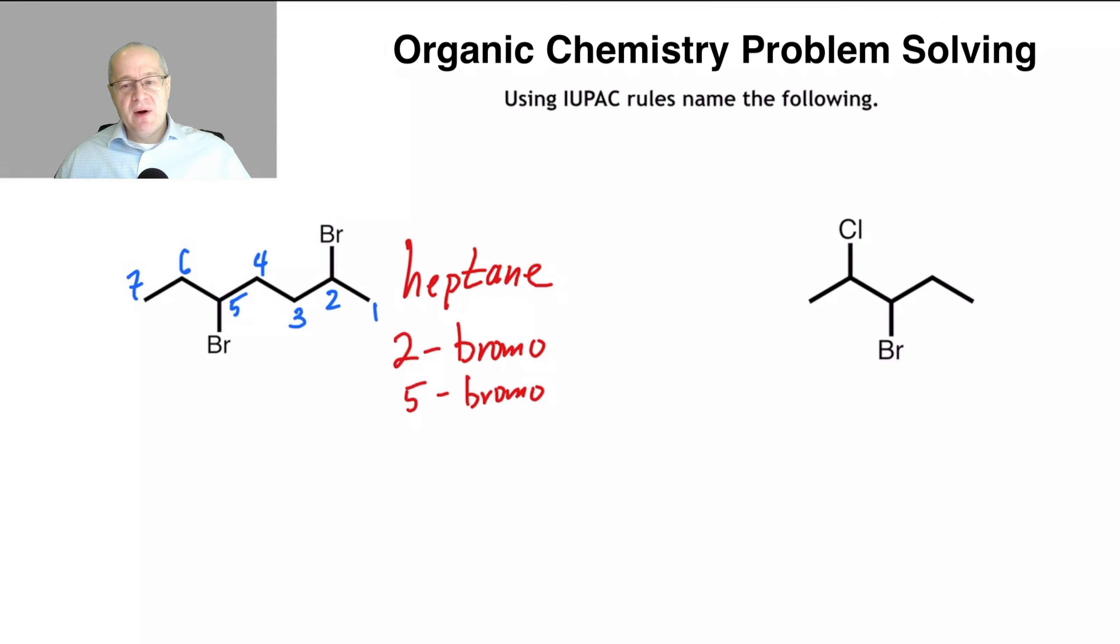So we have a two-bromo and a five-bromo. All right, so there is my root name, heptane, and my substituent names, bromo. One's at carbon two, one's at carbon five.